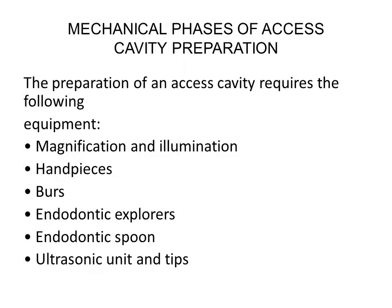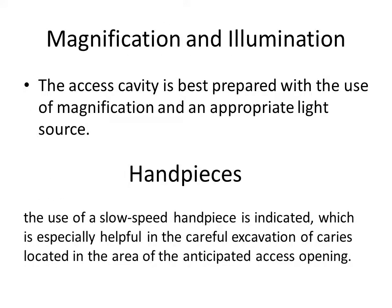The mechanical phase of cavity preparation: to prepare an access cavity we need equipment — magnification and illumination. We need a handpiece, burs, explorer, spoon, and ultrasonic tip. Illumination is important, and magnification using a microscope or loupes is needed.